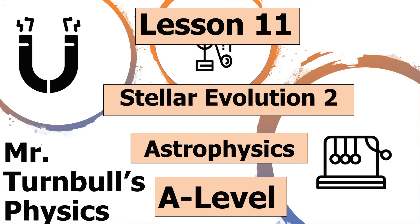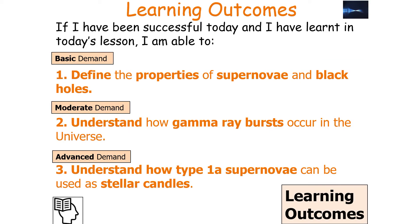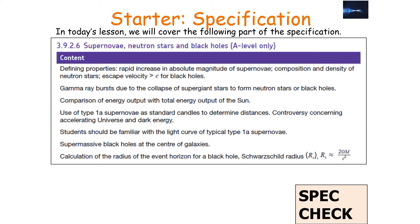Hello, and welcome to today's lesson on stellar evolution, which is part of the astrophysics topic in AQA A-level physics. In today's lesson, we're going to look at how to draw the stellar cycle for stars larger than our sun. If we've been successful, we should be able to define the properties of supernovae and black holes, understand how gamma-ray bursts occur, and understand how type 1a supernovae can be used as stellar candles. This links into AQA A-level physics specification 3.9.2.5, the Hertzsprung-Russell diagram, and 3.9.2.6, supernovae, neutron stars, and black holes.